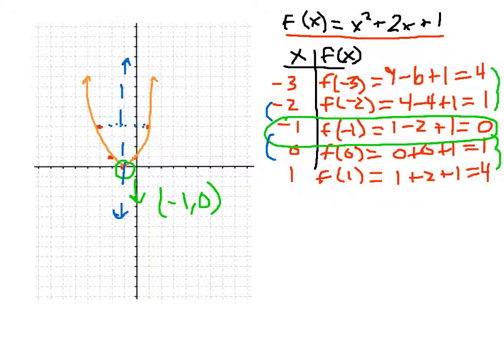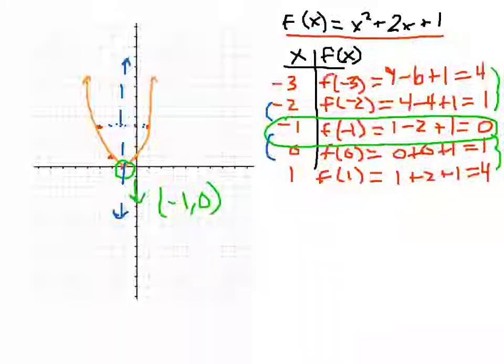So this particular example wasn't so bad by plugging in points, but we will soon see that we can find a way to just find the vertex right away, plot that, find some intercepts - y-intercept, find the x-intercepts if we can, plot those - and we can actually graph it a lot quicker. So we'll see you next time.